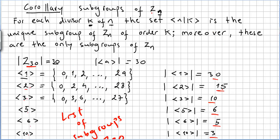So the subgroups of Z_n: for each divisor K of N, these numbers are the divisors — these are our K's — they are dividing N. This is our N. The set ⟨N/K⟩ is the unique subgroup of Z_n of order K.